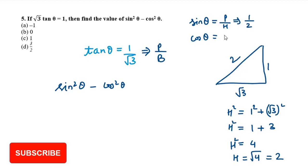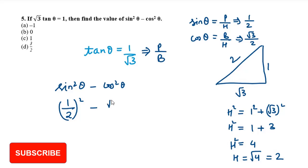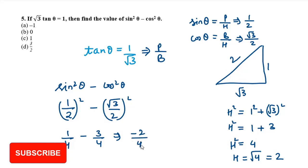Cos theta is B over H, which is root 3 over 2. Now substituting into sin squared theta minus cos squared theta: it is one-half squared minus root 3 over 2 squared, which is 1 by 4 minus 3 by 4, giving minus 2 over 4, which is minus 1 by 2. The answer is minus 1 by 2.